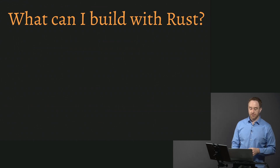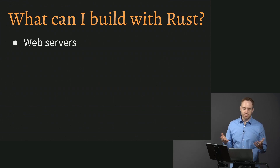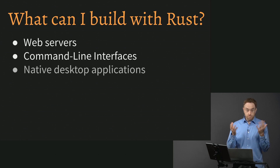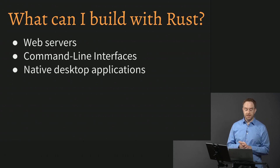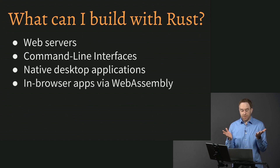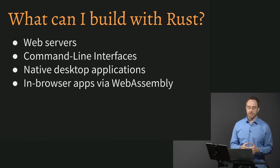What can you build with Rust? One obvious thing for a Front End Masters audience is web servers — you've got a front-end and you usually need a back-end to go with it. You can also build command-line interfaces, which comes up with build tooling or compiling your front-end. You can also use it to build the front-end of a native desktop application — maybe you don't want to use Electron and want something higher performance. And you can actually use it for web front-ends too via WebAssembly, though that's not JavaScript, so older browsers may not be supported.